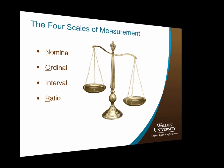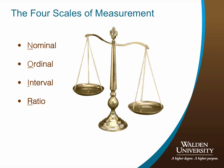Quantitative research uses variables. A variable is a measurement of something that holds at least two distinct values across participants or units of analysis in the study. As such, variables are the basic currency of research. Any discussion of variables must include attributes of variables. A key attribute of variables is the scale of measurement that distinguishes the type of variables. The four basic scales of measurement are nominal, ordinal, interval, and ratio.